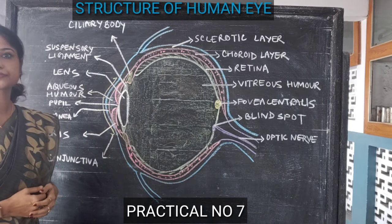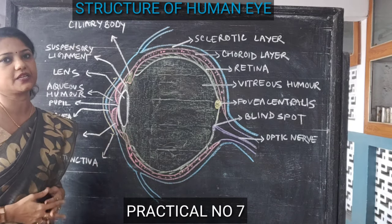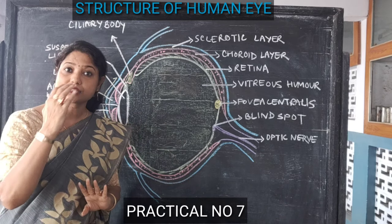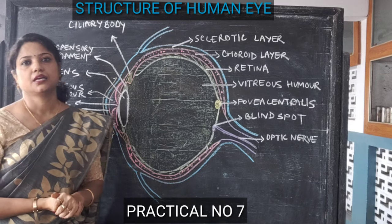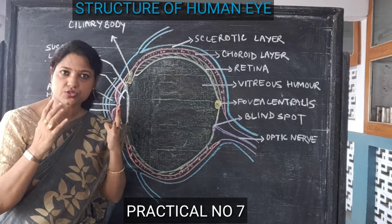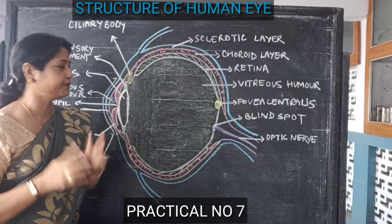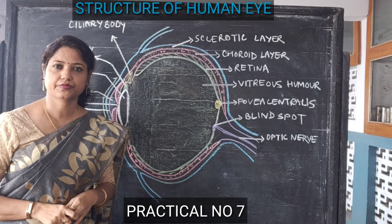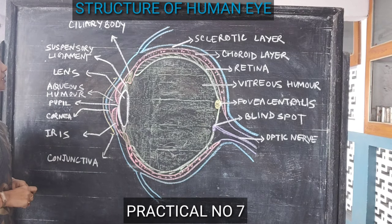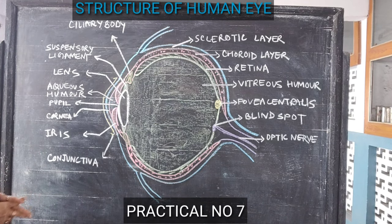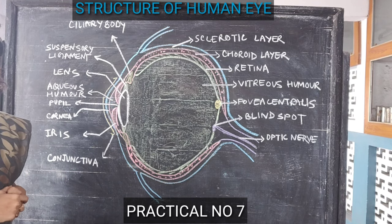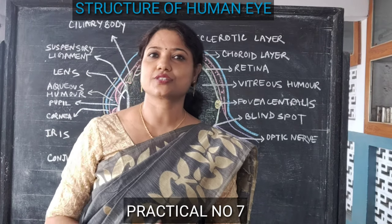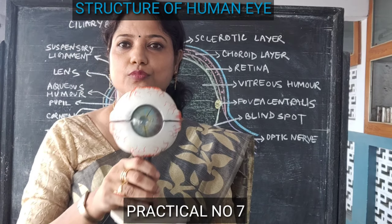In this lens, it flattens or becomes rounded depending upon the object which we are seeing. If we are seeing any distant object, then the lens remains flattened. And if we are seeing any close, nearby object, the lens becomes rounded. So, these are all the different parts which are present internally in our eyes. This is the internal structure of the eye.